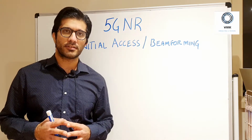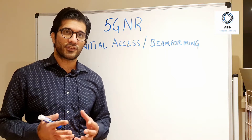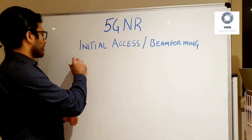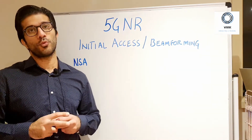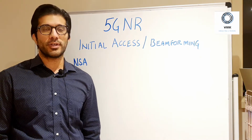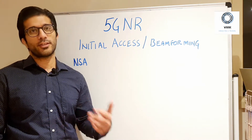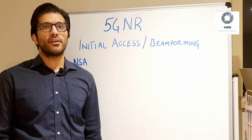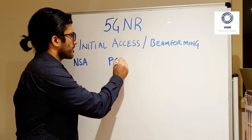The first part in any network, and also in 5G NR, is how the initial access works. If you are in an NSA mode — that is, Non-Standalone mode — then the initial request for the network will be on the LTE network, and once you are attached to the LTE cell you basically communicate with the 5G secondary cell.